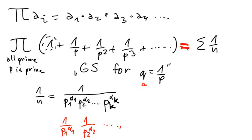This is a geometric series for q equal 1 over p. So it converges. And we can sum it. We already know how to do it.